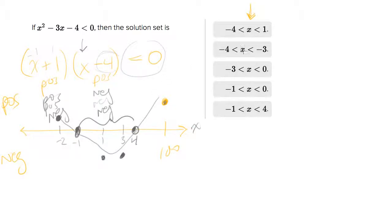So we have to figure out the answer choice that does that. This one, number 5, says all the values of X that are bigger than negative 1 and less than 4. So that's the set where everything is negative.